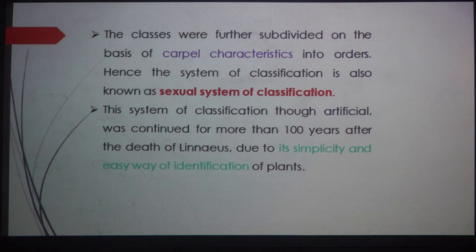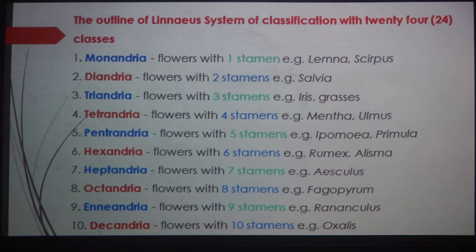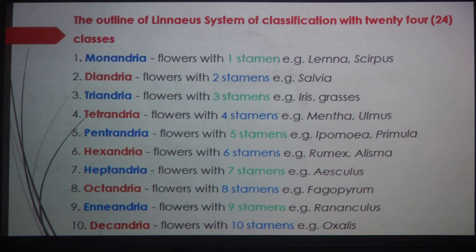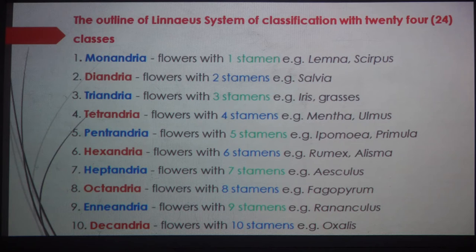Here is the outline of Linnaeus's system of classification with 24 classes, based on stamen characters — number, adhesion/cohesion, and length. The first class is Monandria: flowers with one stamen, example Lemna. The second class is Diandria: flowers with two stamens, example Salvia. The third class is Triandria: flowers with three stamens, examples Iris or grasses. The fourth class is Tetrandria: flowers with four stamens, examples Mentha and Alnus.